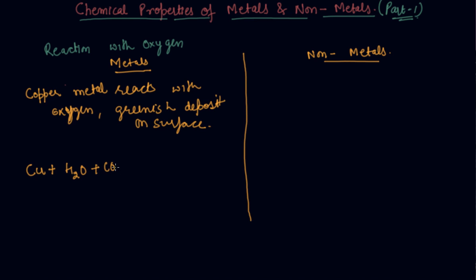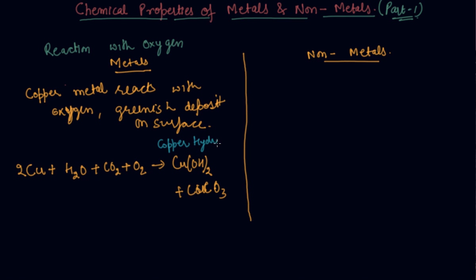The chemical reaction that occurs is: copper plus water plus CO₂ from the air — basically this is a reaction with air — and this makes copper hydroxide plus CuCO₃, copper carbonate. Let me write the names for you: copper hydroxide and copper carbonate.